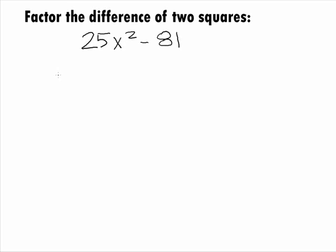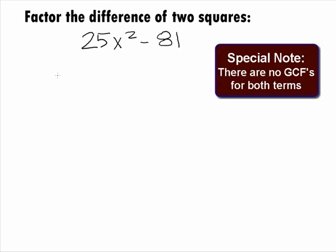In this example, we want to factor the binomial 25x squared minus 81. Note that this binomial does not have a greatest common factor for all of its terms.